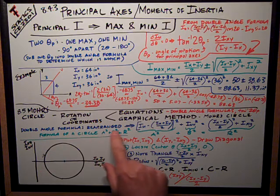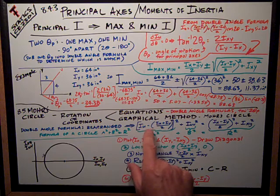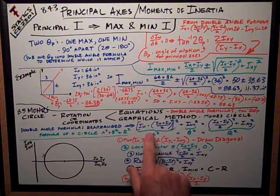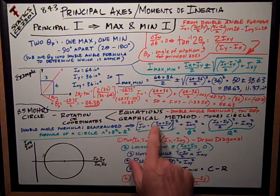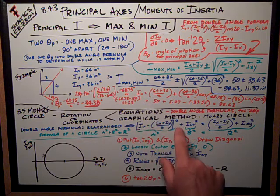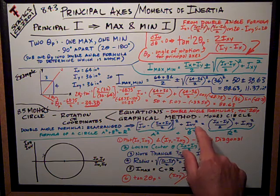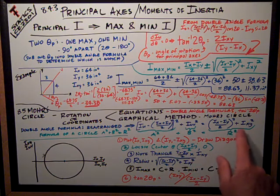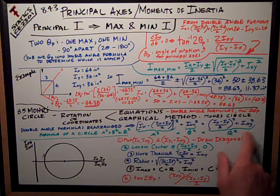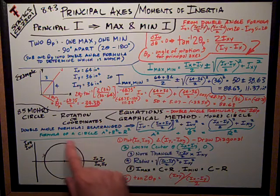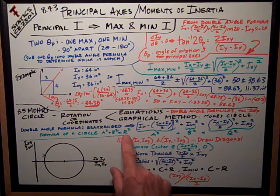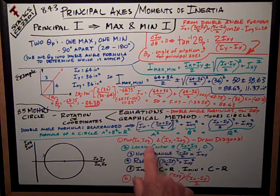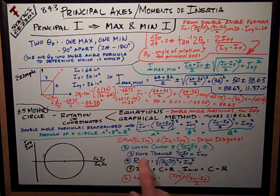The double angle formulas rearranged look like this. This was part of Mohr's brilliance, was to recognize this. If I take these double angle formulas and rearrange them, I can get this expression, I_u minus I_x plus I_y over 2 whole quantity squared plus I_uv, the product of inertia by the u and v squared is equal to this expression, I_x minus I_y over 2 squared plus I_xy squared. Well, that looks to Mohr and to the math people like the formula for a circle, which is a squared plus b squared is equal to r squared.